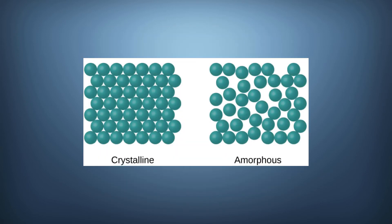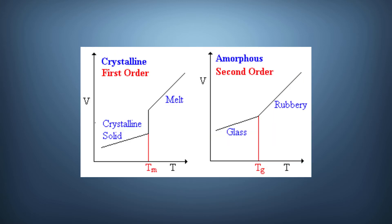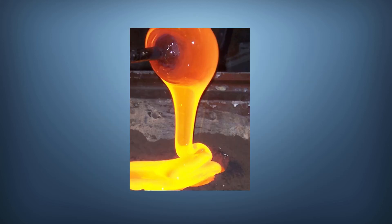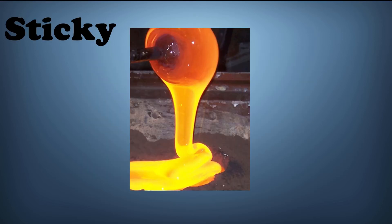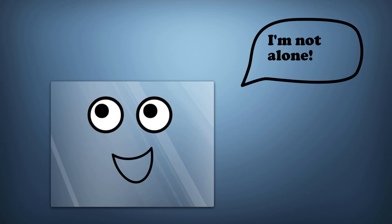This means that the atoms aren't organized — they're spread out randomly. This can allow for something called glass transition, which is where an amorphous solid can go from a brittle substance like glass to a rubbery, viscous substance with a rise in temperature. This can be seen with molten glass, which is a very sticky and viscous substance.